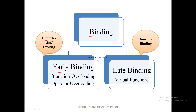With early binding, the linking takes place at compile time — before execution. With late binding, the linking between the procedure call and the object takes place at execution time. As the name indicates, with late binding the program is already compiled, and when we enter the execution phase the object is linked to the function. The best example of late binding is the virtual function.